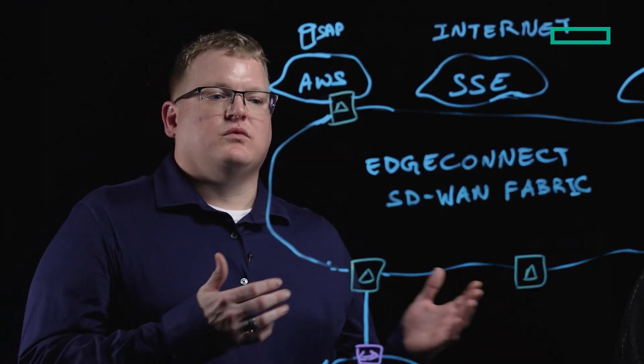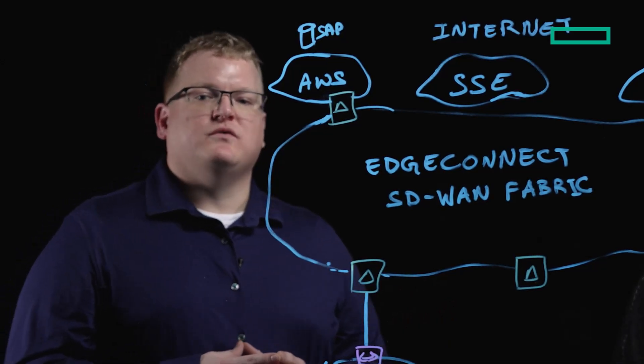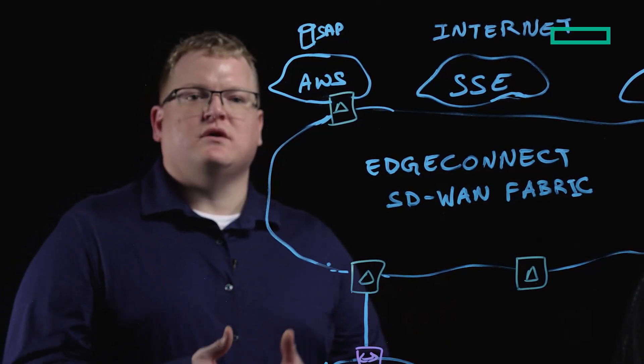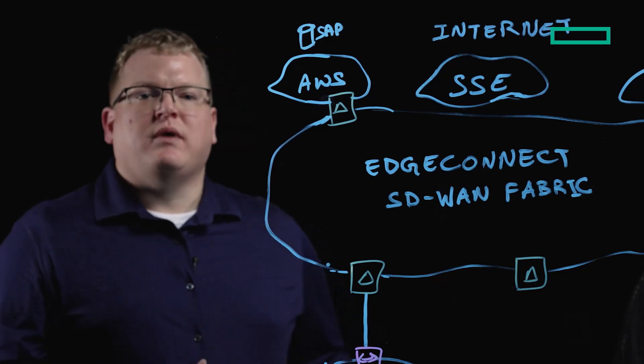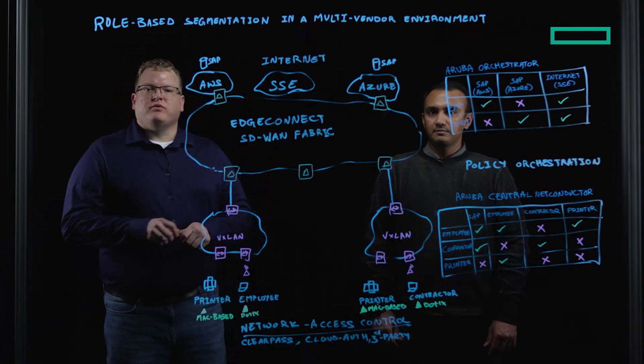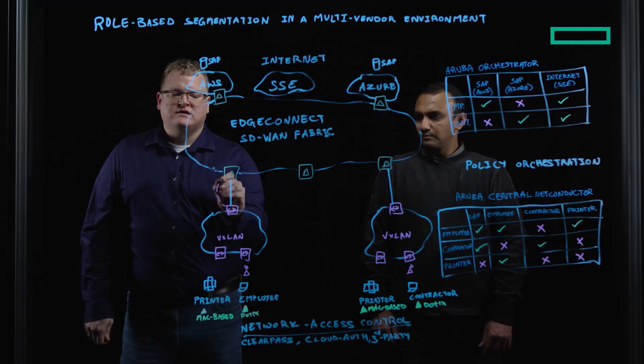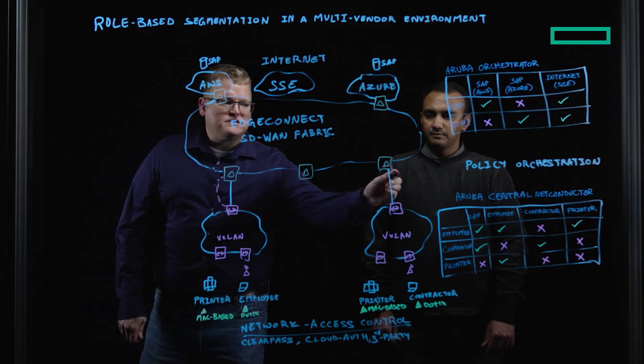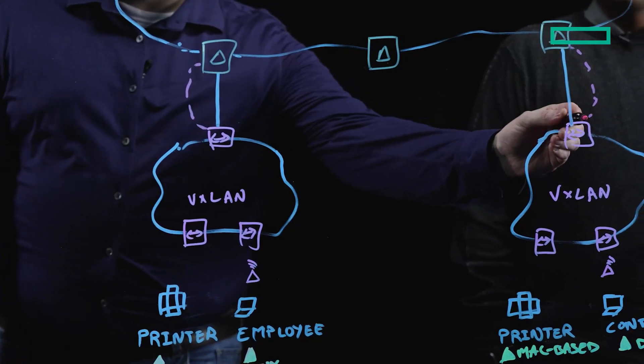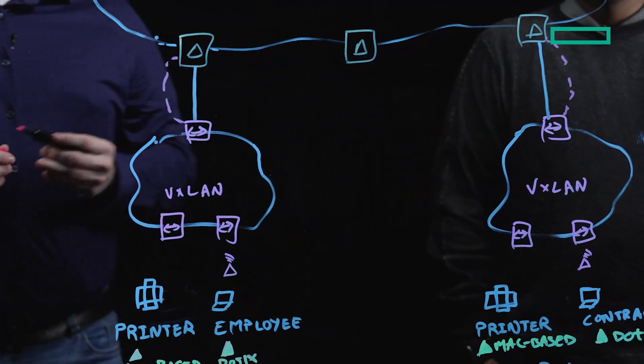As Prashant mentioned, the Aruba Central Net Conductor allows for role-based micro-segmentation across LAN segments. By integrating with the fabric borders using standards-based BGP, EVPN, and VXLAN, the EdgeConnect appliance is able to learn this role information and carry it across the SD-WAN fabric.